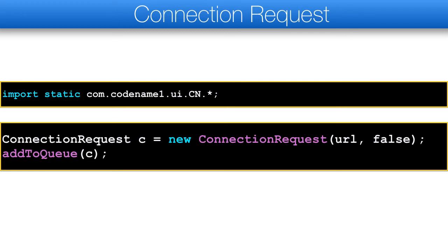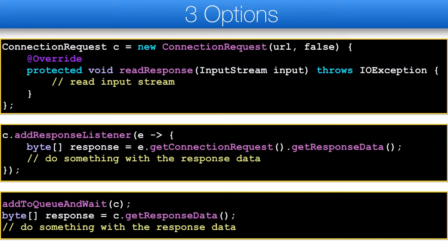Also notice that the request is asynchronous, so it might not have completed after the addToQueue call. So how do we get the actual data from the URL? There are three options. First, we can override readResponse and read the stream directly. This is arguably the best approach as we will only read the data once. readResponse is invoked on the network thread, so make sure not to change the UI from that method. That is a good thing though, as all your processing won't block the event dispatch thread and won't slow the app noticeably.